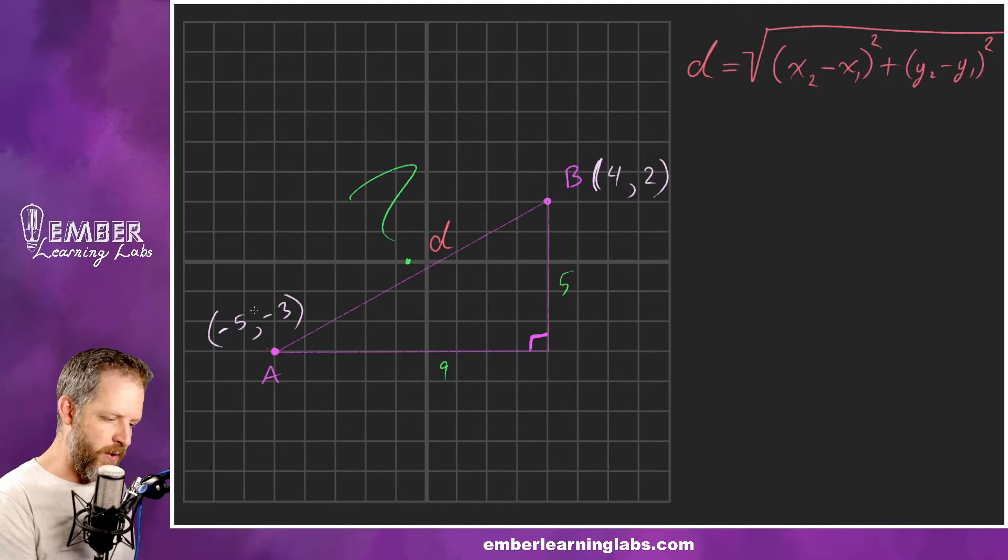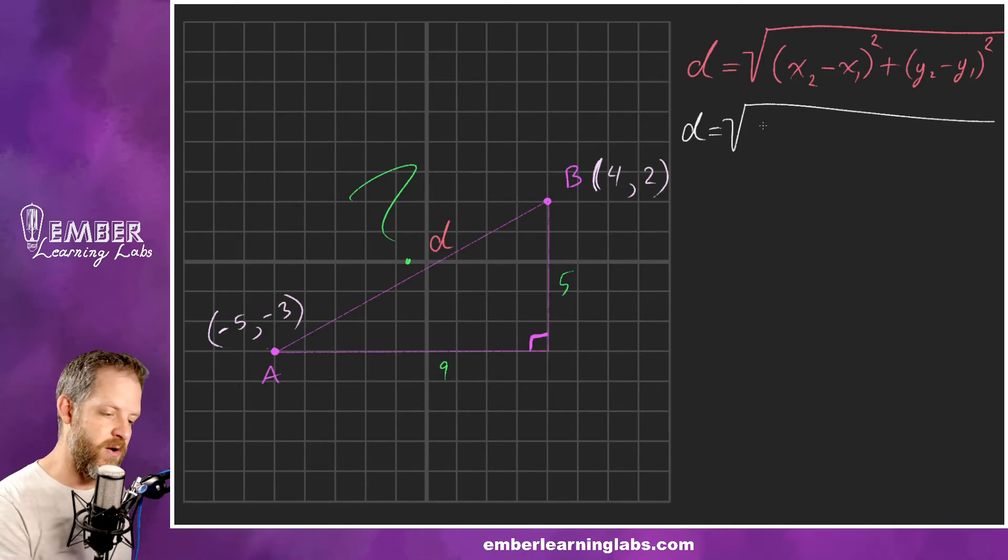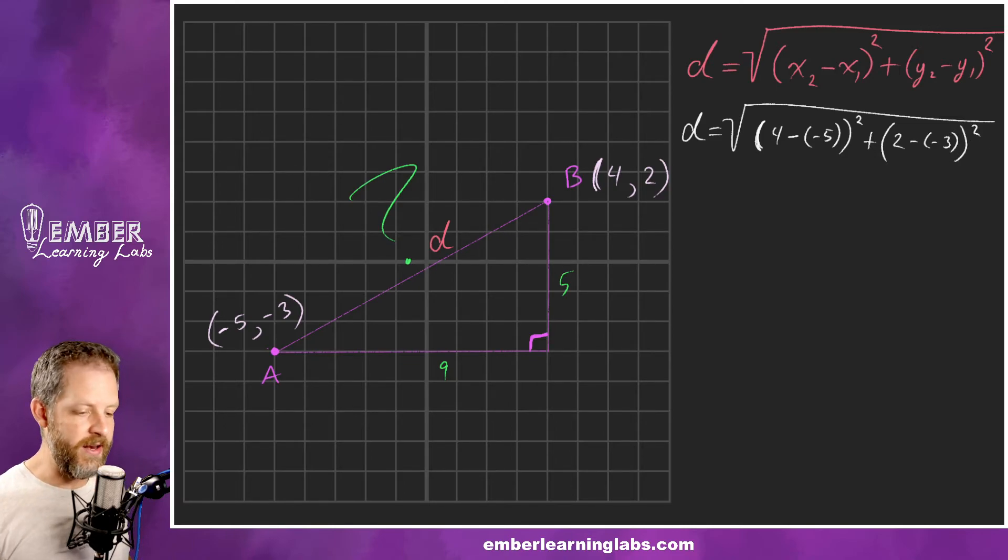In this case, if we call this point one and this point two, we can plug and chug. That's one of the reasons why formulas are nice - you just have to know the numbers, stick them where they go, and then crank out the answer. We're going to not forget to do this square root at the end. X2 would be 4 minus x1 which would be negative 5, so 4 minus negative 5. I like to put those extra parentheses to keep it neat. Don't forget the square. Plus y2 would be 2 minus y1 which is negative 3, squared.